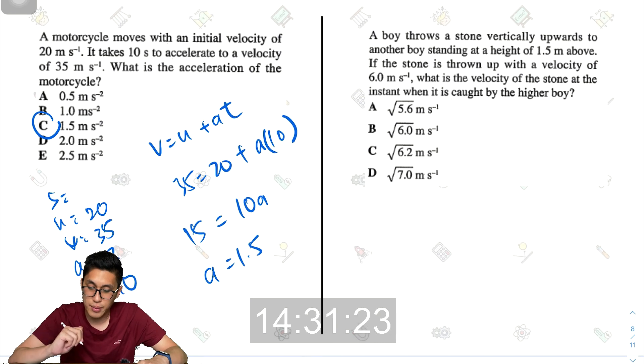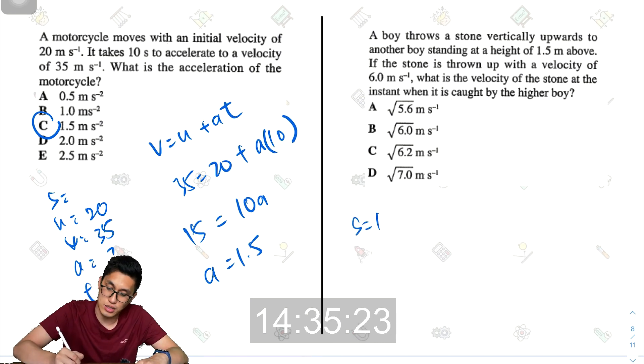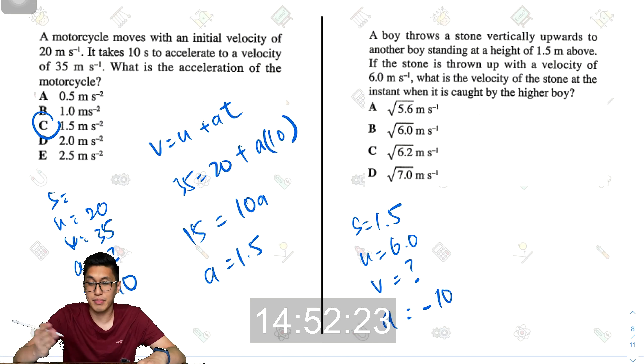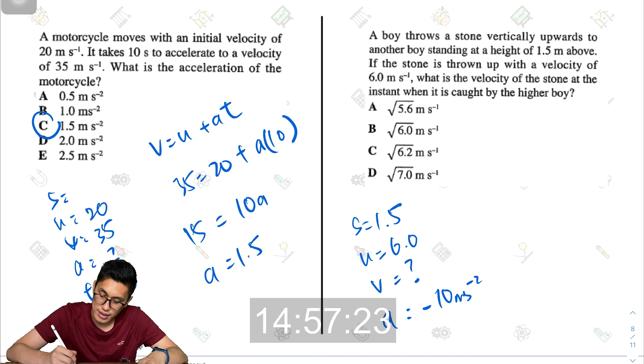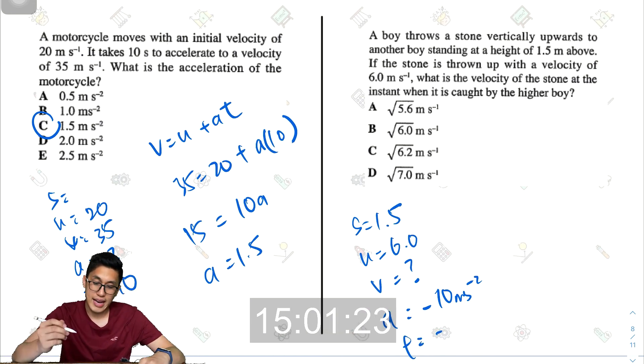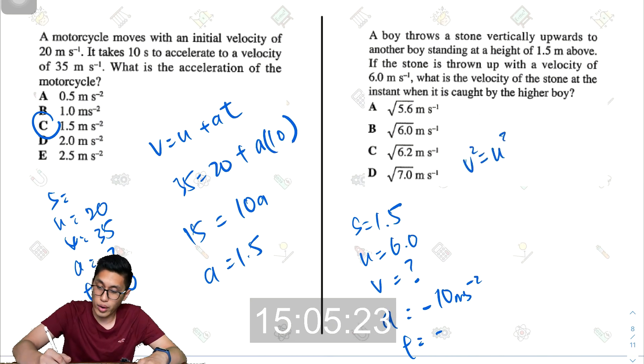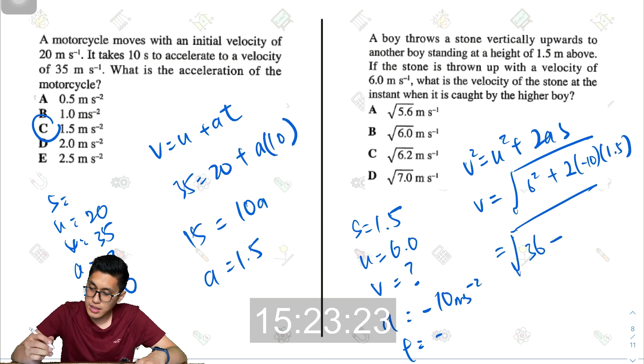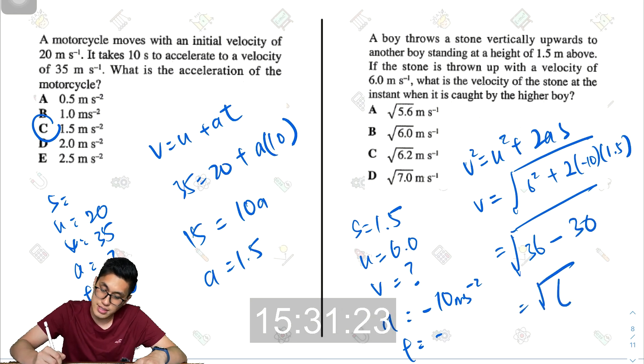A boy throws a stone vertically upwards to another boy standing at a height of 1.5 meters above. So my S is 1.5. If the stone is thrown up with a velocity of 6. Initial velocity, that's 6. What is the velocity of the stone at the instant when it's caught? So they're trying to find the final velocity. Acceleration would be negative 10 because that is gravitational acceleration. Negative 10 meters per second squared. And time is not given. So S, U, V, and A. I can use V square equals U square plus 2AS. V will be equals to square root of 6 squared plus 2 times negative 10 times S, 1.5. So square root of 36 minus 30. So it goes to square root of 6. The answer would be B.